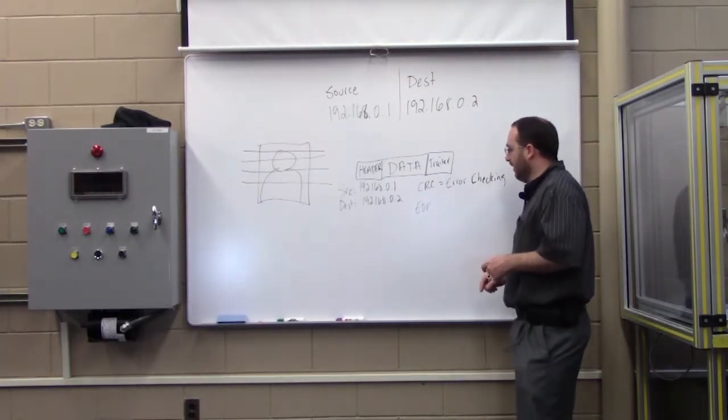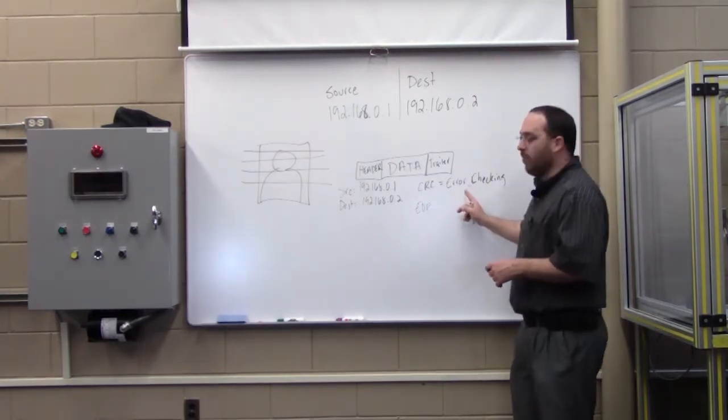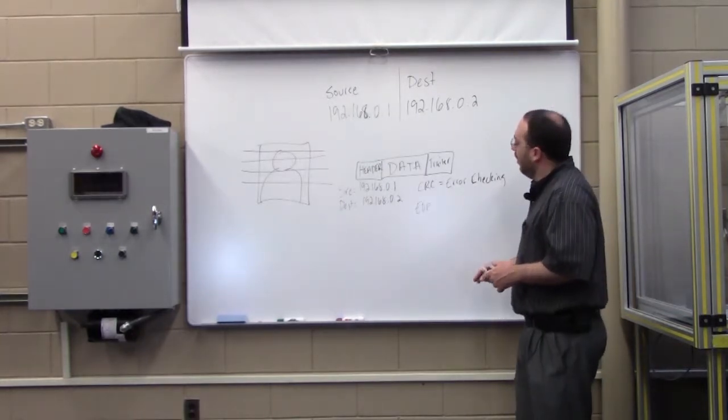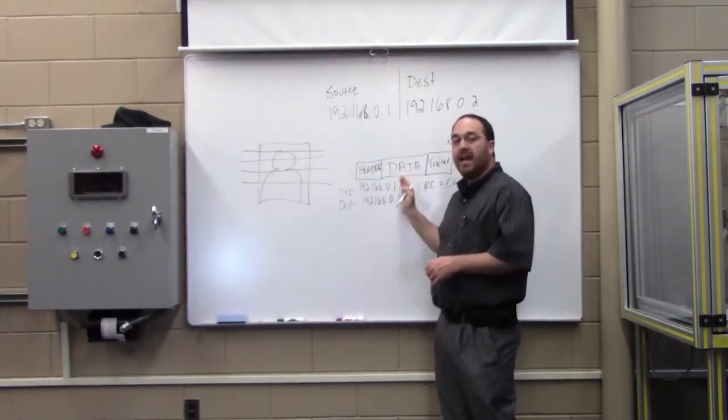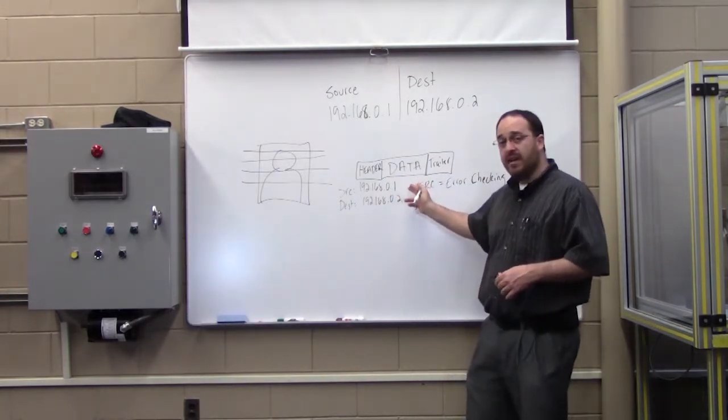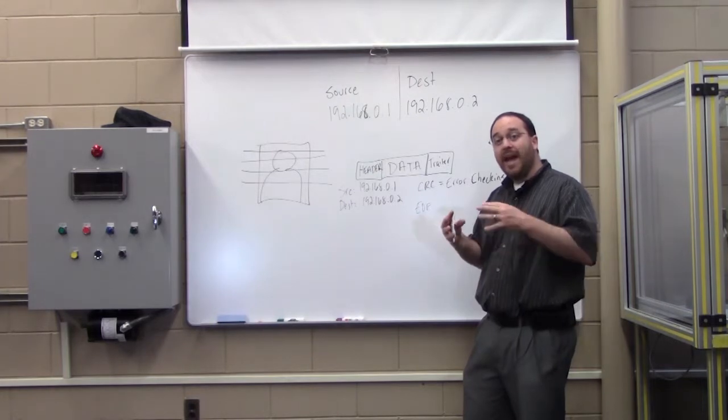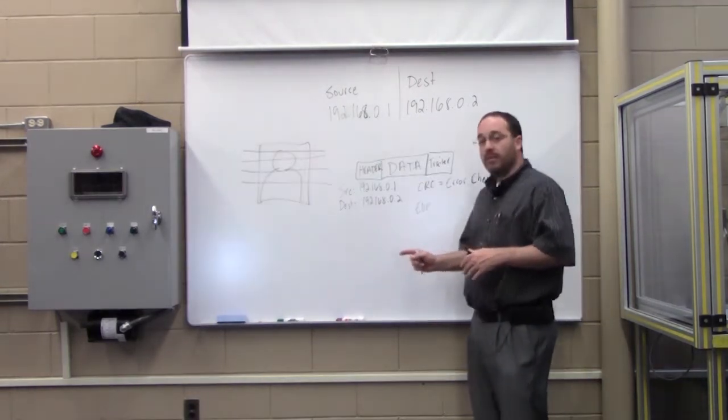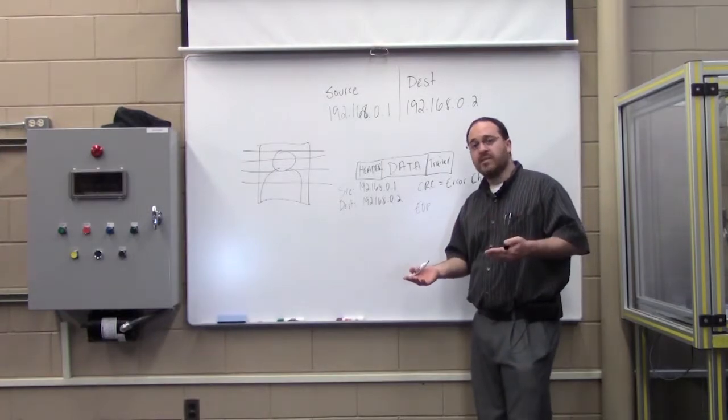So that's called the end-of-frame delimiter. Now, I want to talk a little bit more about this error checking and how that actually works. When we have this data prepared at the source, we run what's called an algorithm on this data when we are encapsulating it or packaging it up into this frame. That algorithm will give us an answer or result.